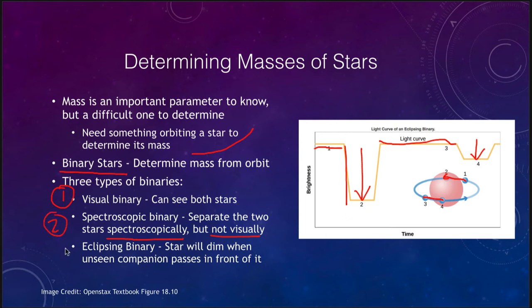These are the three different types: the visual binary, the spectroscopic binary, and the eclipsing binary. The spectroscopic binary is by far the most common because all you have to be able to do is get a spectrum. For a visual binary it has to be relatively close to you, and for an eclipsing binary the stars have to be tilted in exactly the right direction.